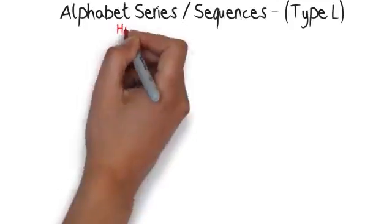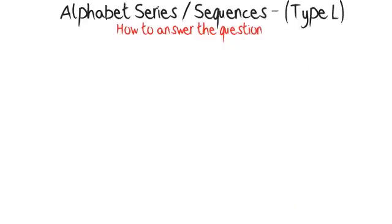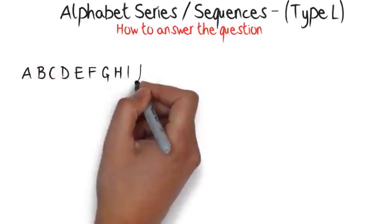When you get to Z, to carry on your sequence by going back to A and continuing to work through the alphabet. This is called a wraparound.